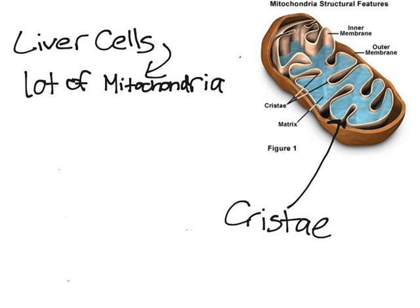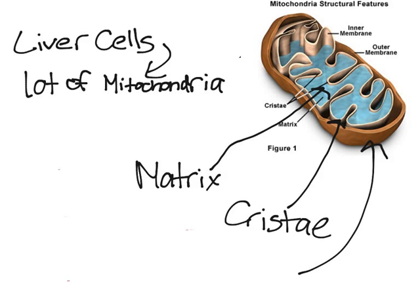And all of the blue liquid that you see inside the cristae is called the matrix of the mitochondria. And the outside, the mitochondria has double membrane.